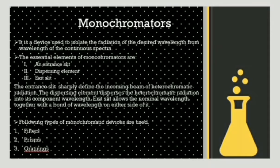The next instrumentation component is the monochromator, which converts light — a mixture of several photons and radiations — into a simple beam of a single wavelength. The essential elements of monochromators are an entrance slit, dispersing element, and exit slit. The entrance slit sharply defines the incoming beam of heterochromatic radiations. The dispersing element disperses the heterochromatic radiations into component wavelengths. The exit slit allows the nominal wavelength together with a band of wavelengths on either side. The types of monochromatic devices are filters, prisms, and gratings.